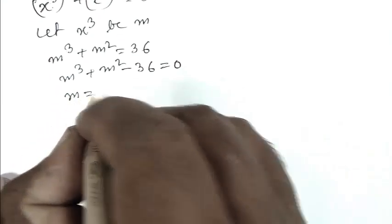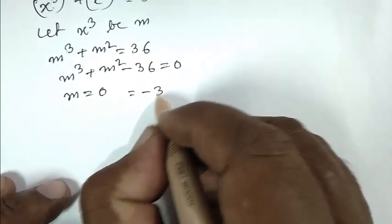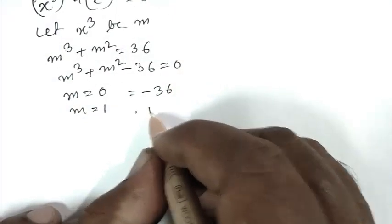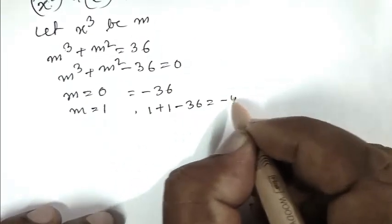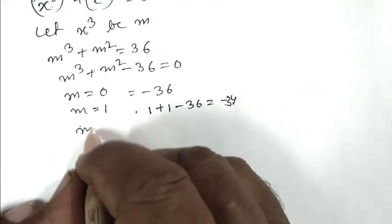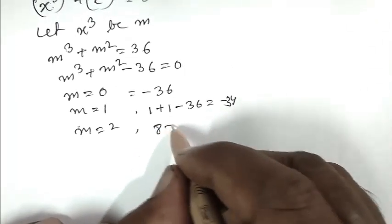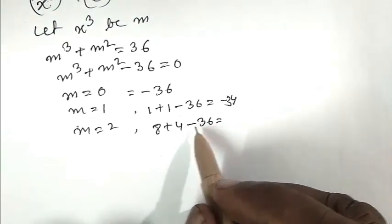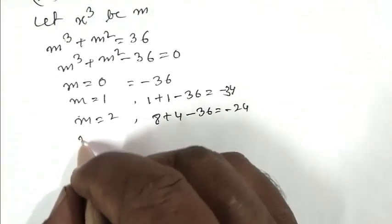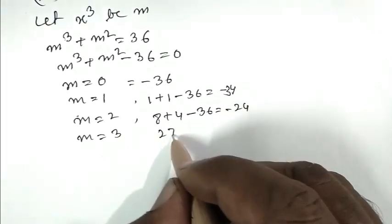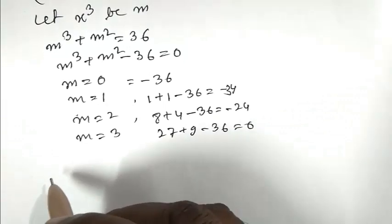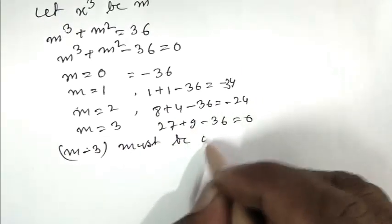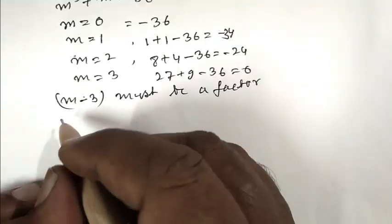Putting the value of m equal to 0: 0 minus 36, that is minus 36. If m equals 1, then 1 plus 1 minus 36, that is minus 34. If m equals 2: 8 plus 4 minus 36, that is minus 24. If m equals 3: 27 plus 9 minus 36 equals 0. So m minus 3 must be a factor.